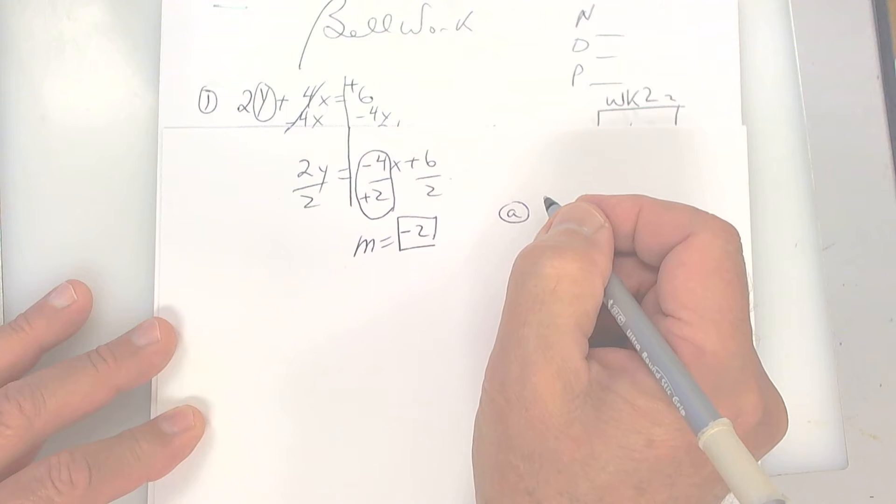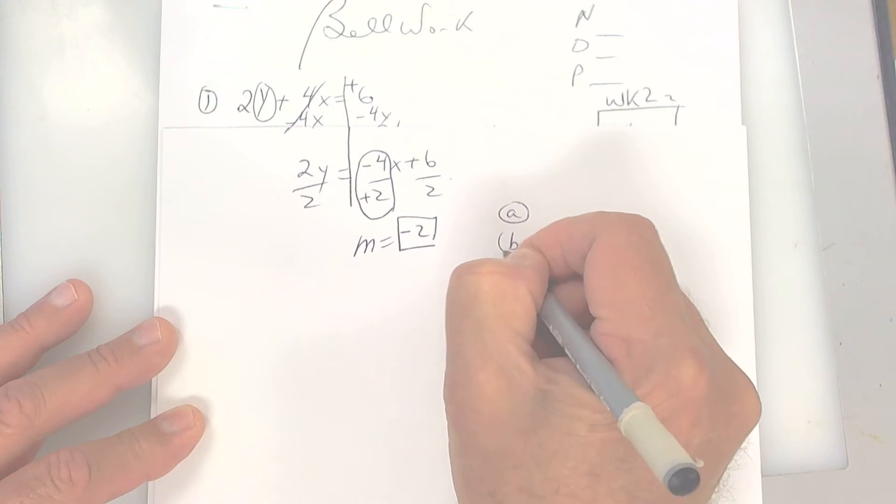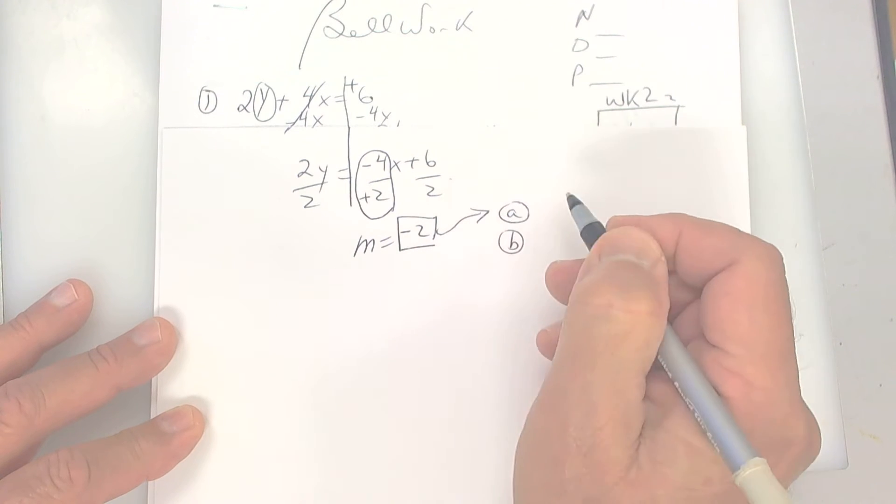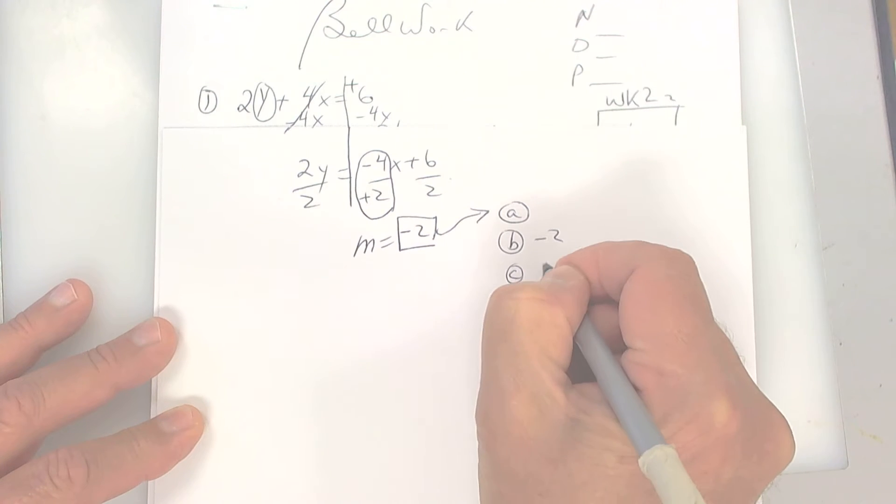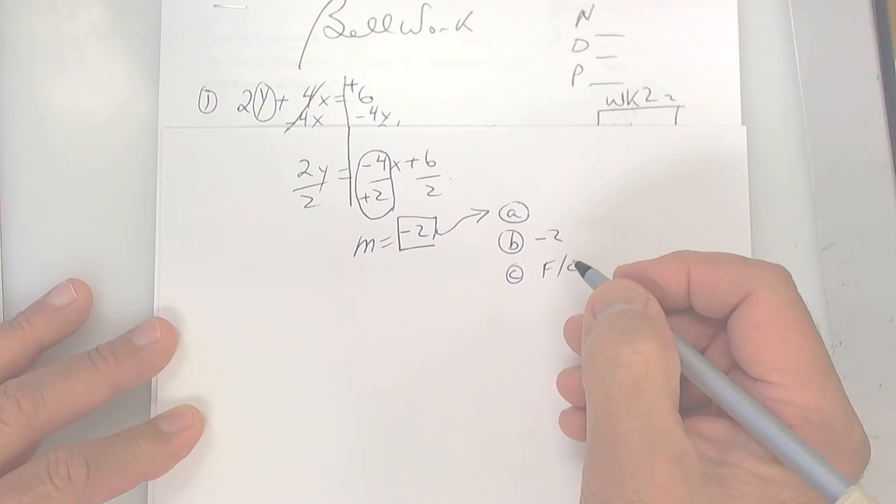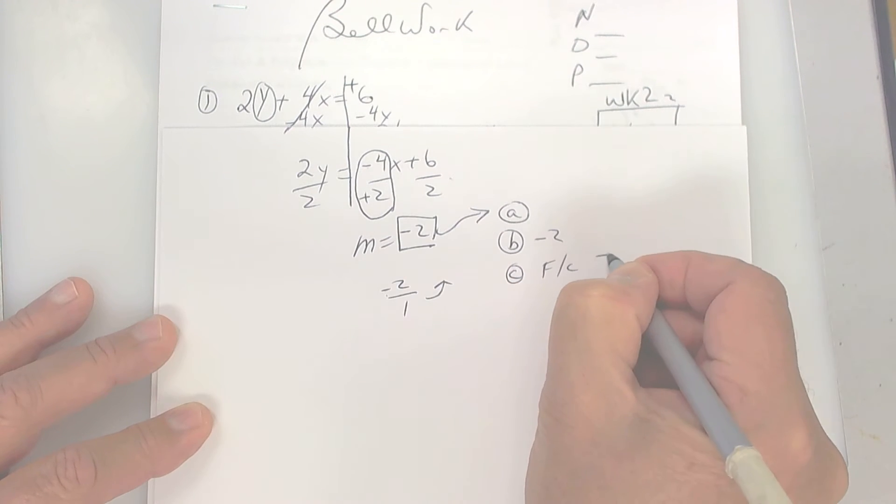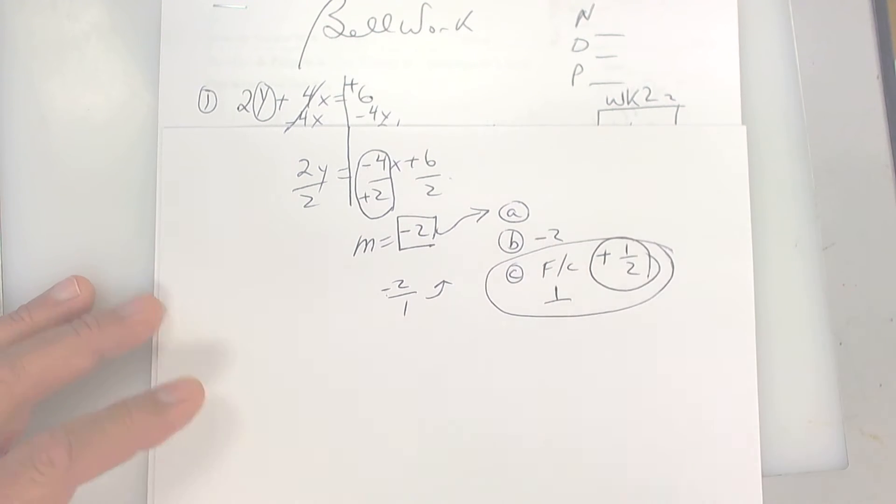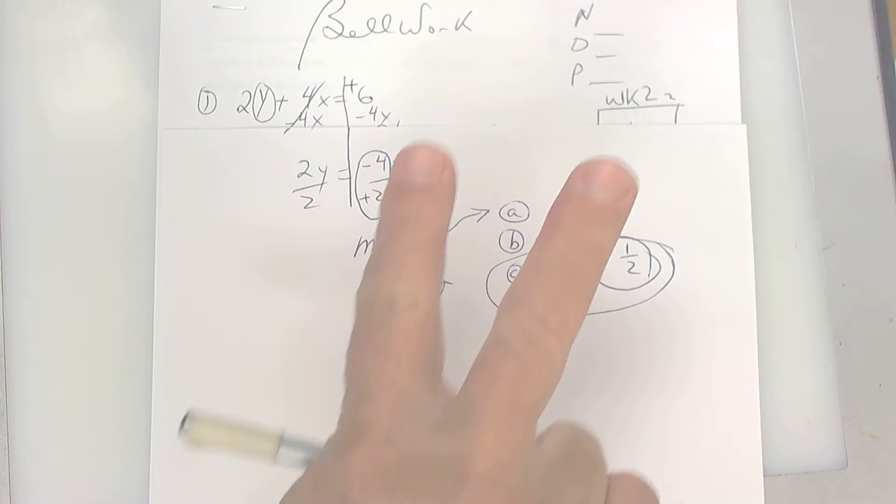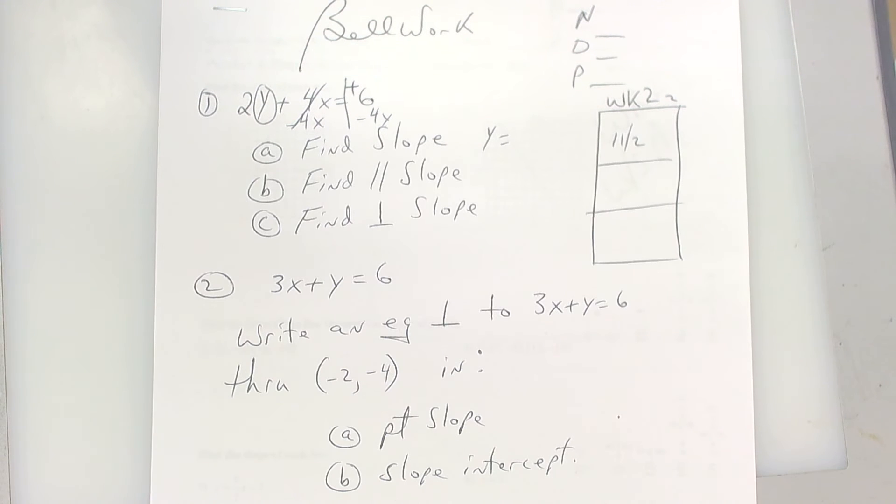So for A, if you want parallel, which I think was B, rather, that's A, parallel would be the same slope. Perpendicular, you've got to flip, change, or negative reciprocal. So put negative 2 over 1 as a fraction and then flip it and change it. When you change it, it becomes a plus and it becomes 1 half, and that will give you perpendicular. Make sure you understand you've got to do two things to be perpendicular.